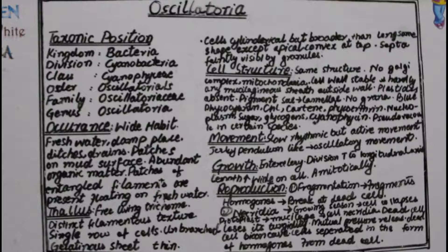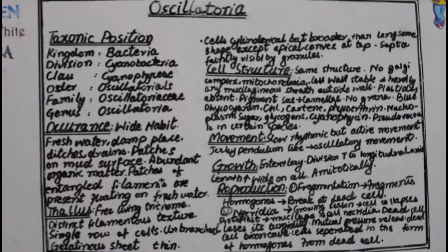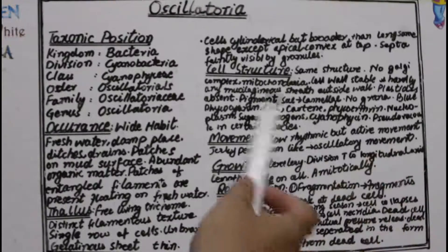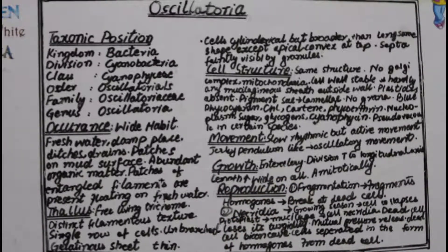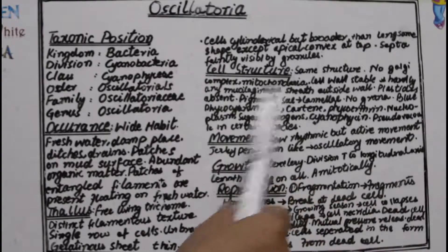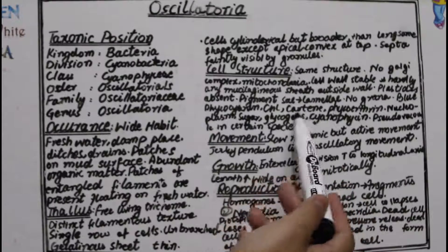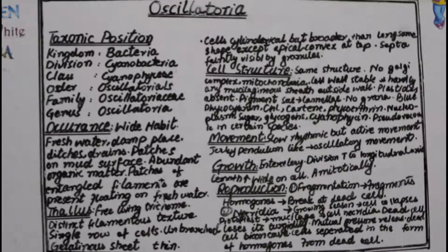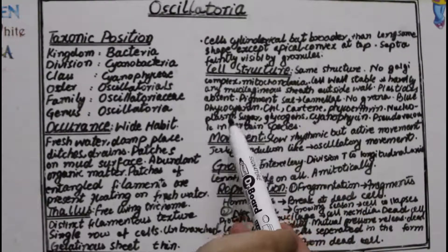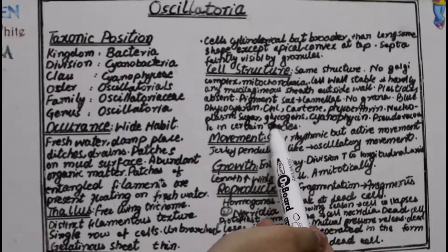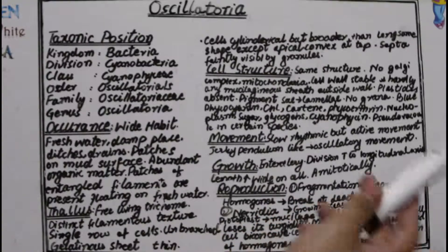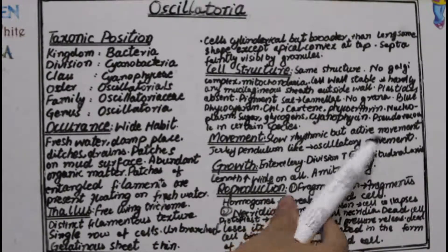Plastids are not present; instead, pigments are found in the cytoplasm. In Oscillatoria, pigments are present in the form of sacs known as lamellae, but these are not arranged one over the other like the grana of modern plants. Being cyanobacteria, Oscillatoria is blue-green in color due to the presence of phycocyanin. Other pigments present are chlorophyll, carotene, and phycoerythrin.